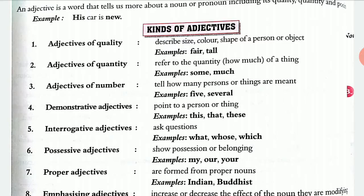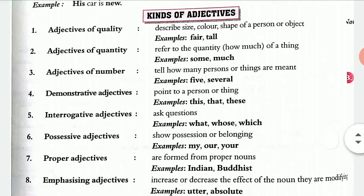Adjectives of quality describe the quality of the noun — that is, the size, color, and shape of a person or object. Examples include fair and tall. Moving on, adjectives of quantity refer to how much of a thing there is. For example: much, many, and few.